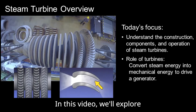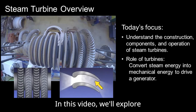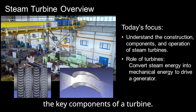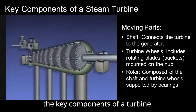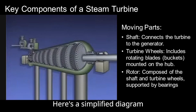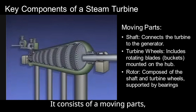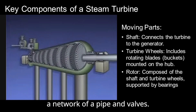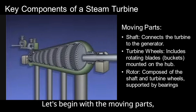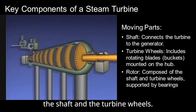In this video, we will explore the key components of a turbine. Here is a simplified diagram of a steam turbine. It consists of moving parts, stationary components, and a network of pipes and valves. Let's begin with the moving parts: the shaft and the turbine wheels.